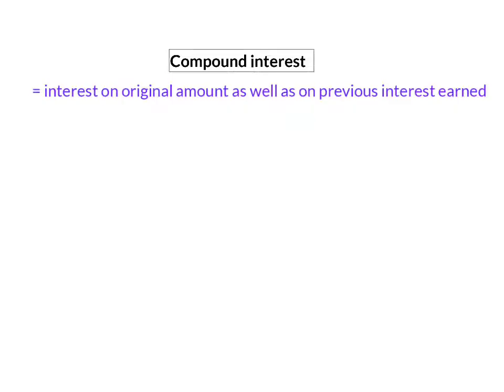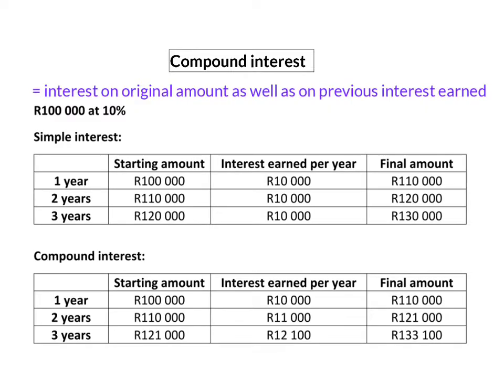This means that interest you receive is reinvested into the account to also receive interest. The tables below show the amount of simple interest compared to the amount of compound interest that you would receive on an investment of R100,000 at 10% per year.